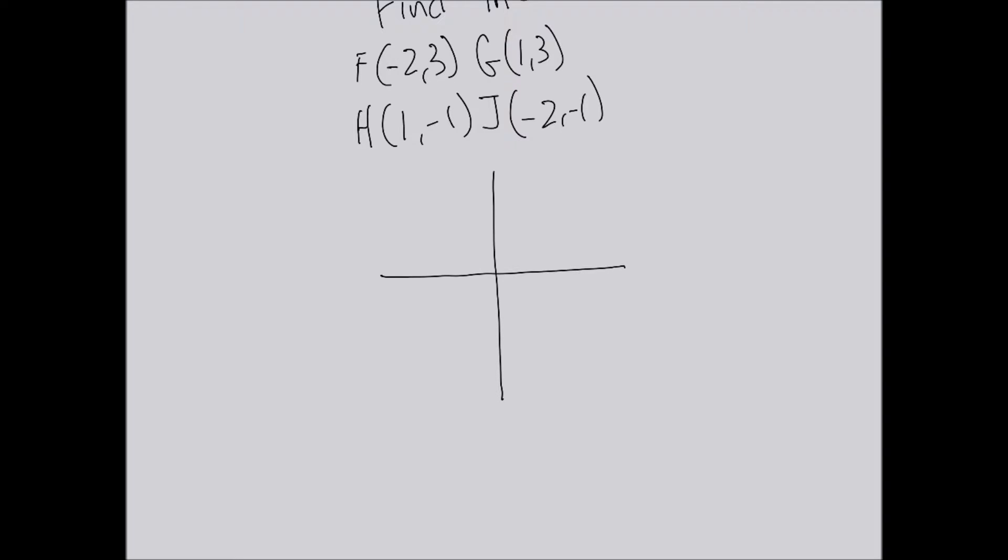They're directly across from each other. Notice that F and J have the same x-coordinate, which means they're directly on top of each other, and G and H also have the same x-coordinate. This is going to be a rectangle.